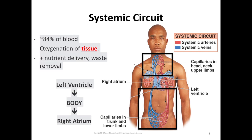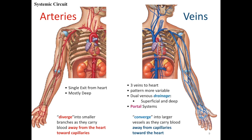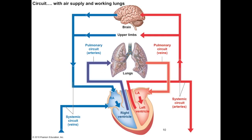On the systemic circuit, oxygenated blood leaves the heart through a single exit, the aorta, which diverges into smaller branches carrying blood toward capillaries within all body tissues. Blood is then drained through small venules which converge into larger veins toward the right atrium. Blood from above the heart drains through the superior vena cava, blood from below drains through the inferior vena cava, and blood draining the heart itself enters the right atrium through the coronary sinus. Arteries and veins have other important structural and circulatory differences as well.